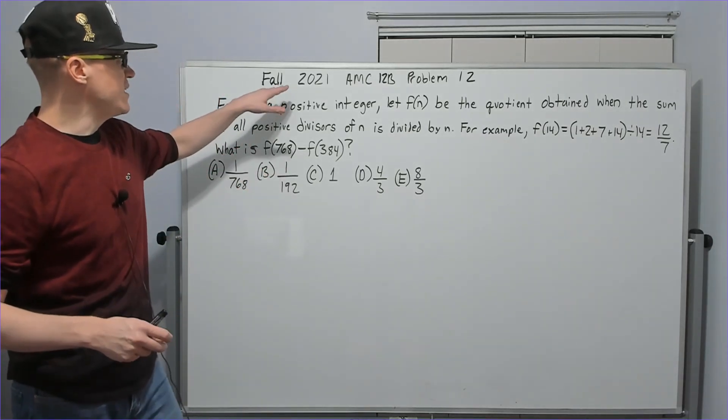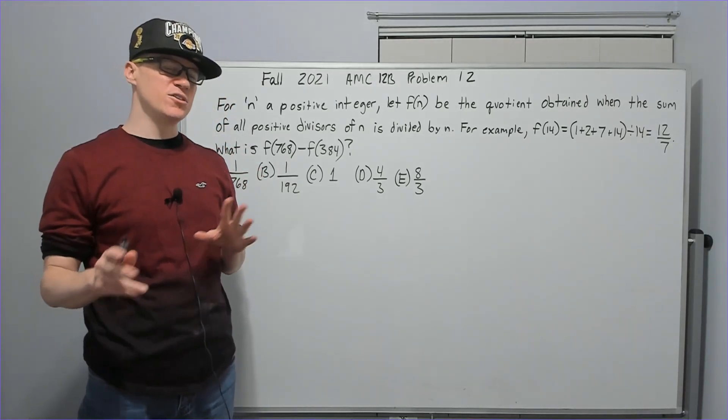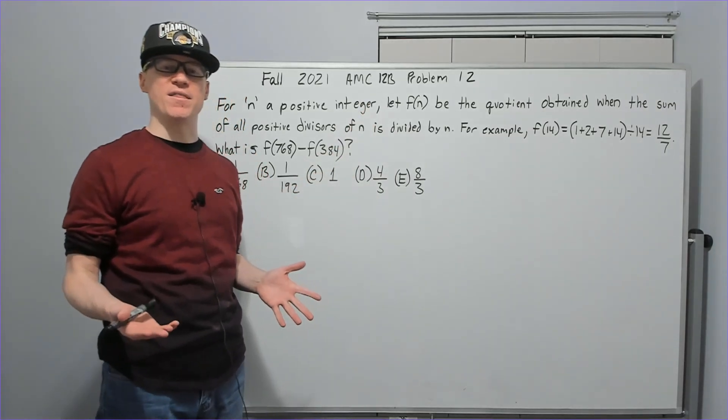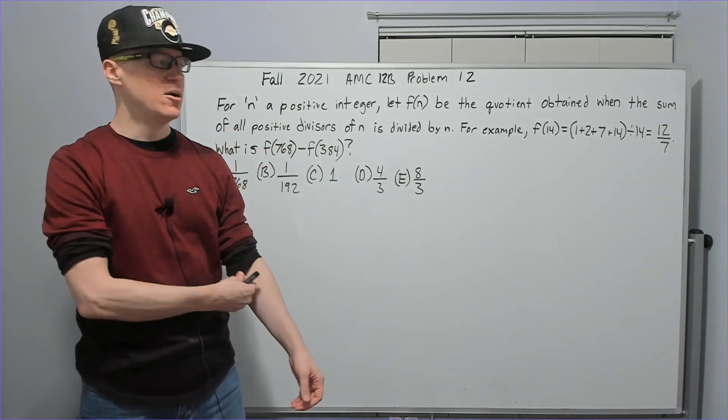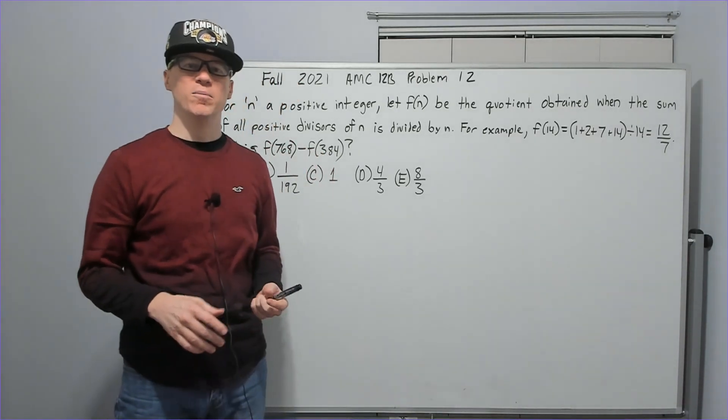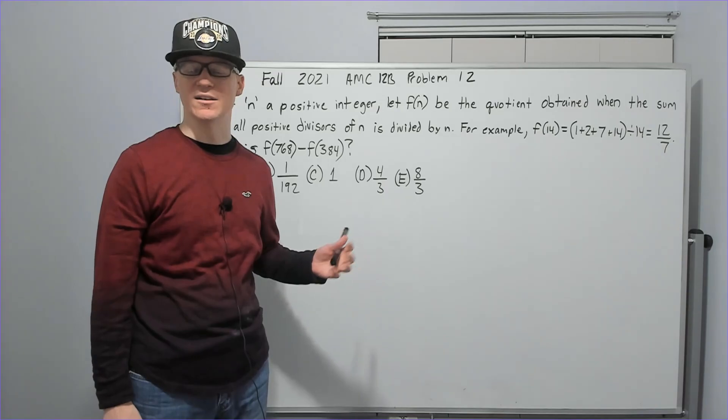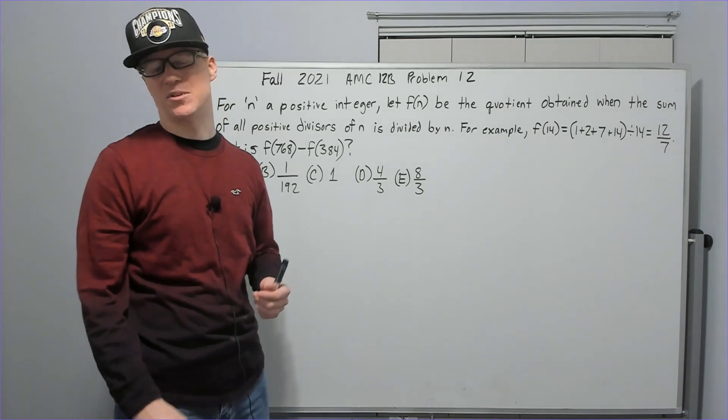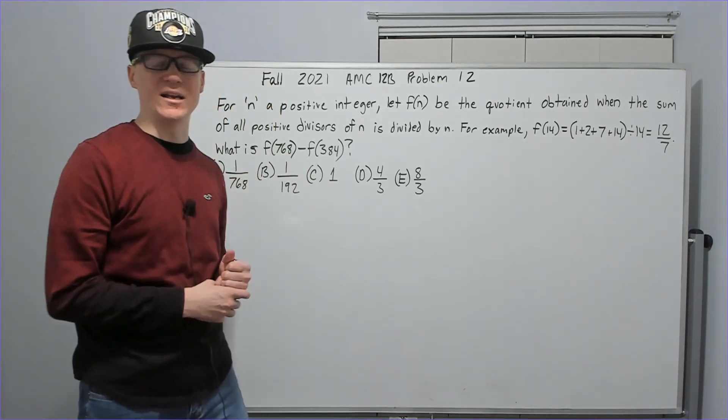Okay, so this is the Fall 2021 AMC 12B Problem 12. I'm going to do it first in a partially done bash kind of method. I'm not going to complete that method, but I want to show you what that looks like because that's your plan when you don't know the second method, which I did not know actually. The concept that you needed I have never seen on a previous AMC of any kind for 20 years, not yet in the AoPS book, but it might be in one. I just haven't come across this.